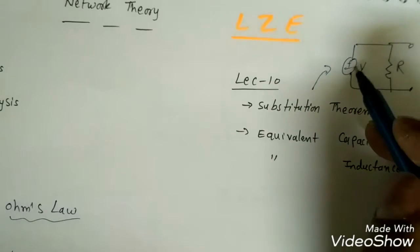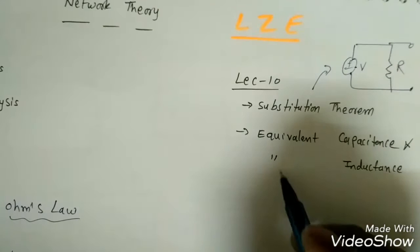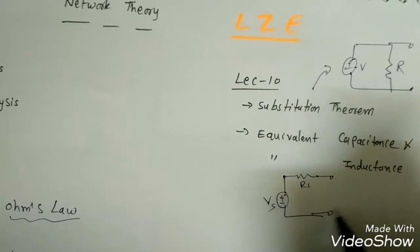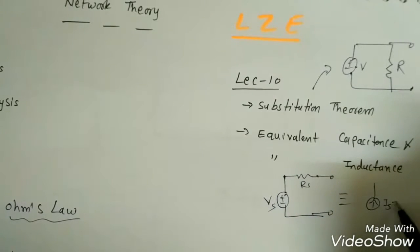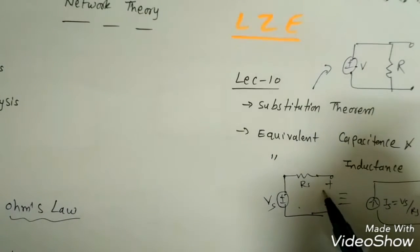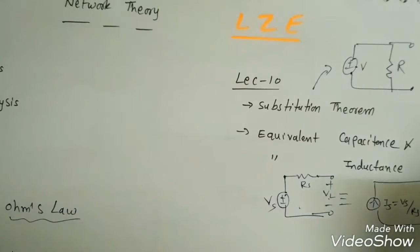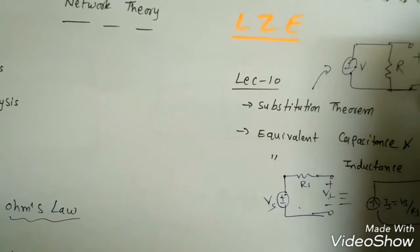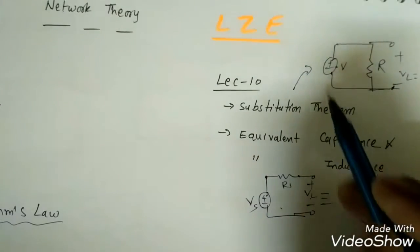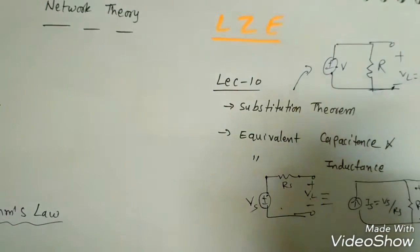We cannot apply source transformation in every case. Source transformation is applicable only when there is a voltage source VS with a series resistance RS, because the current IS equals VS divided by RS, with a parallel resistance RS. These two circuits give the same effects. So substitution theorem and source transformation are not the same — they are different concepts.